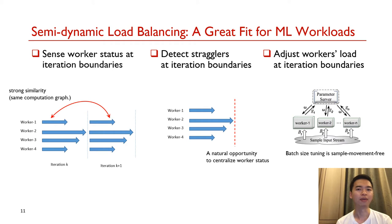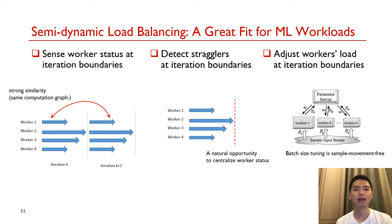Semi-dynamic node balancing is a great fit for distributed model training. First, it is possible to sense worker status at the iteration boundaries, since each SGD iteration follows the same computation graph. Therefore, the execution status in past iterations can work as a valuable reference for the future. Second, all workers have to wait at the barriers of BSP, and such synchronization barriers provide a natural opportunity to centralize worker execution information and identify stragglers. Third, the batch size is an ideal tool to control iteration load at the boundaries. Model training is a stochastic process and insensitive to particular samples. Therefore, by simply adjusting the batch size instead of remote sample transmission, we can attain the same load-tuning effect.